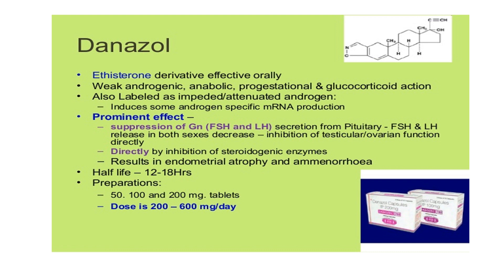The mechanism of action of danazole is by suppressing the gonadotropin hormones FSH and LH secreted from the pituitary. When FSH and LH are decreased, the hormones decrease and there is no testicular or ovarian function, so these organs atrophy. It also directly inhibits steroidogenic enzymes involved in steroid synthesis from cholesterol, resulting in endometrial atrophy and amenorrhea. The half-life is about 12 to 18 hours.